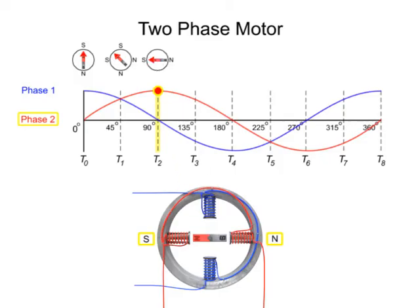At time 3, phase 2 has diminished current flow, while current flow through the vertical rotor coils increases and reverses direction. This causes the rotor to move another 45 degrees to the left.